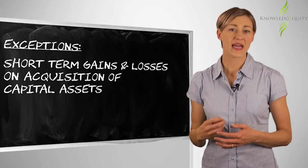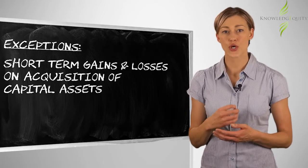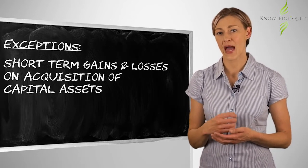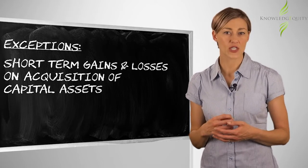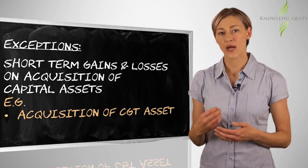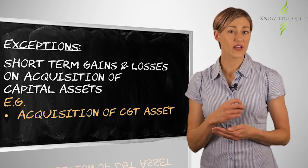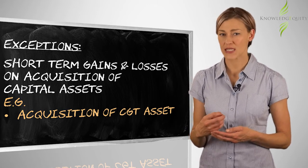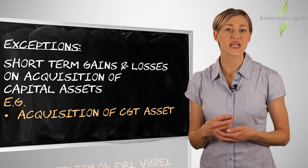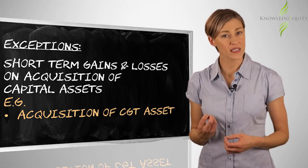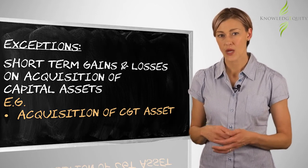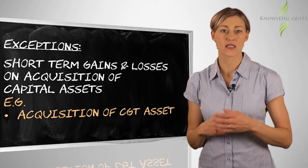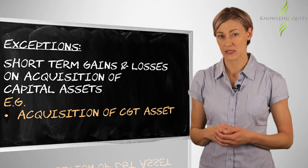There are exceptions to these rules. They include short-term Forex gains and losses on the acquisition of capital assets, such as acquisition of CGT assets, where if FRE4 occurs within 12 months after acquisition, then the gain is subtracted from the cost base and reduced cost base, or a loss is added to the cost base and reduced cost base.